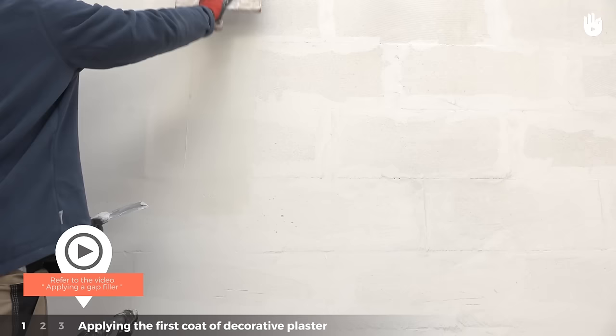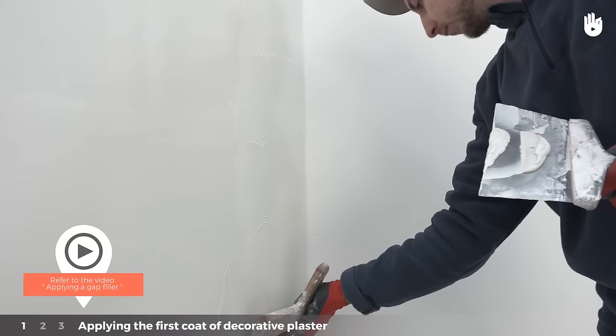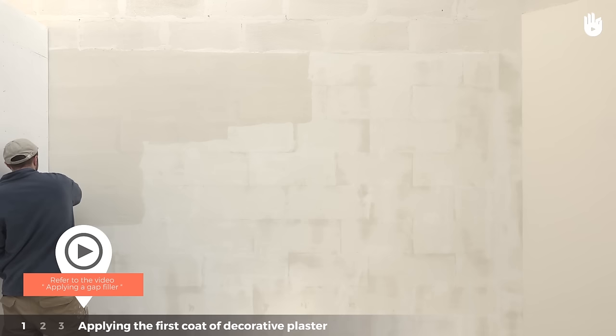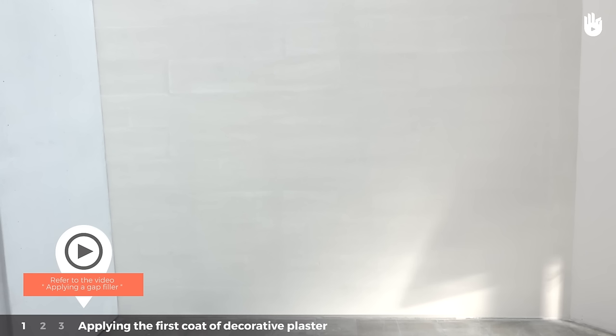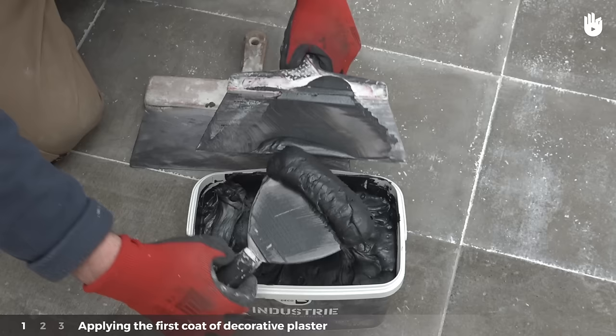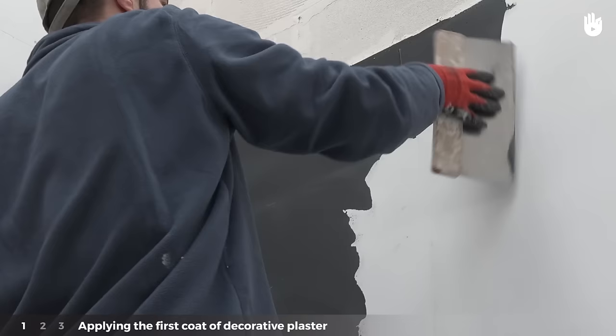Before plastering the wall, apply a primer or spackle. To do this, refer to the video applying a gap filler. Once this first coating is dry, scratch off any rough bits and carefully sweep up the residue. The wall is ready for you to apply the first layer of decorative plaster.